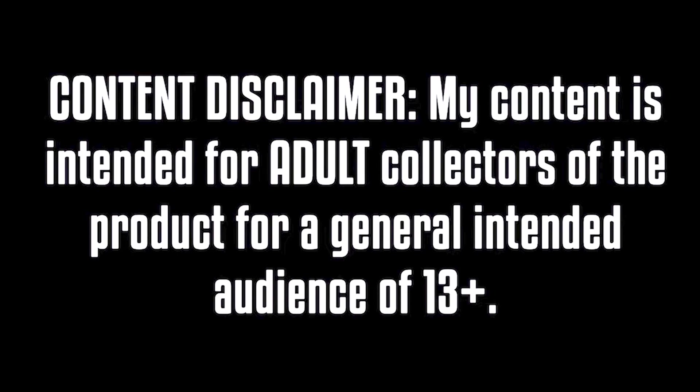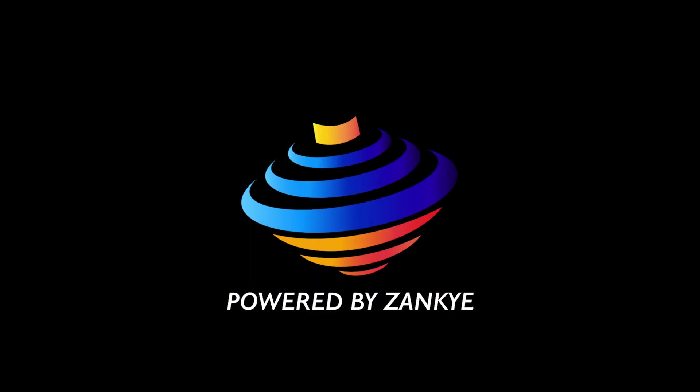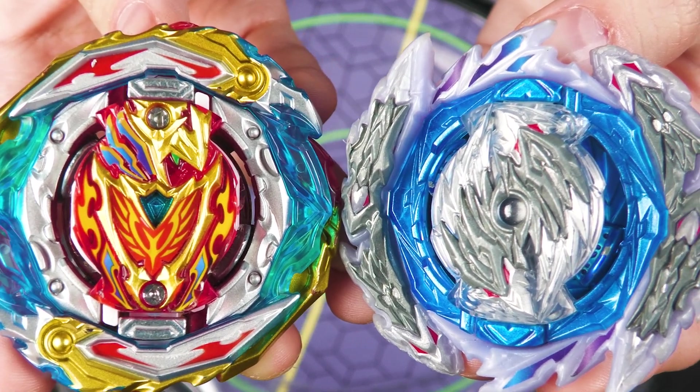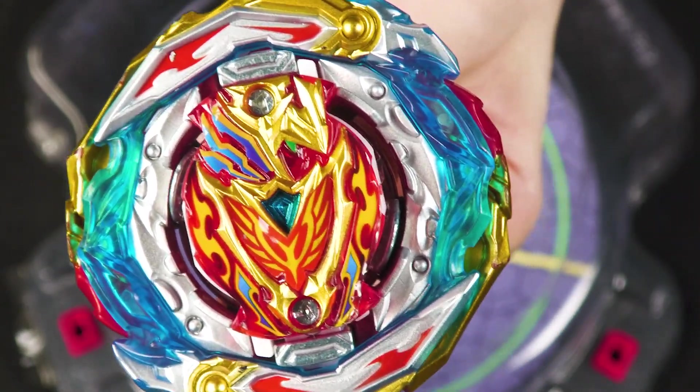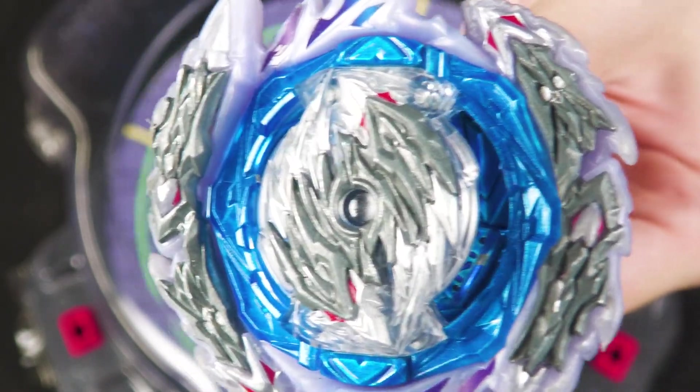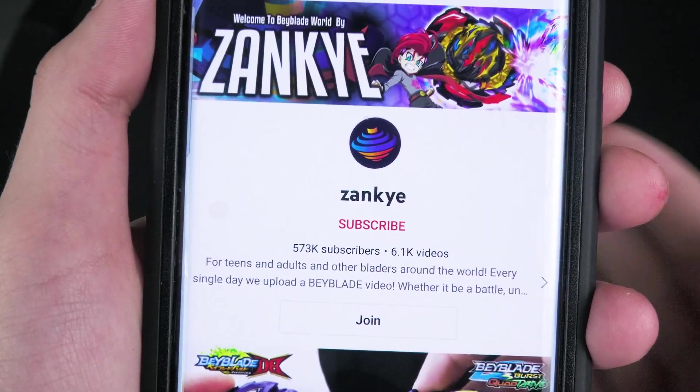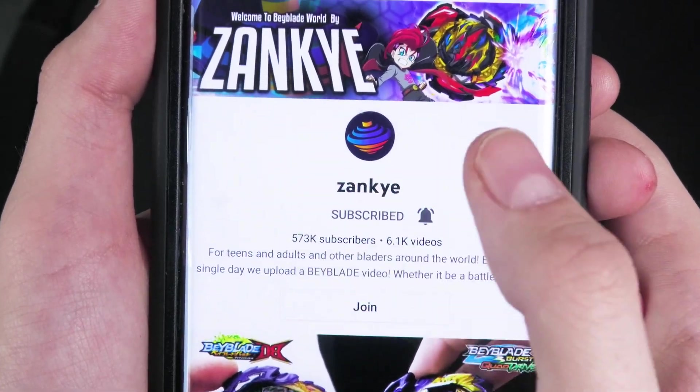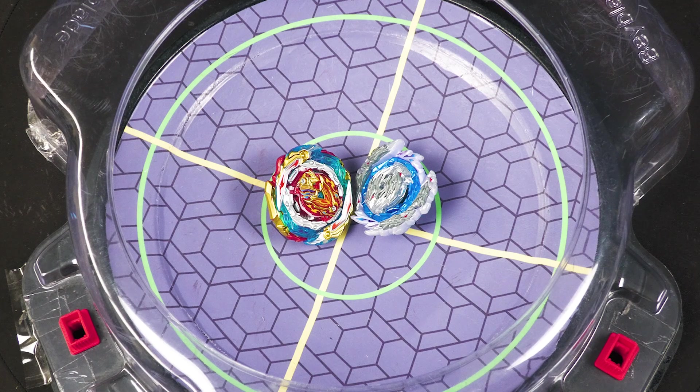My content is for 13 and up, or adult collection of the product. Longinus versus Achilles. The amazing Achilles with so many modes goes up against the fierce Longinus with its heavy metal and attack power. Which out of the two will be our victor? If you are new here, subscribe to the channel with bell notifications on. Comment which bay you think is going to win.